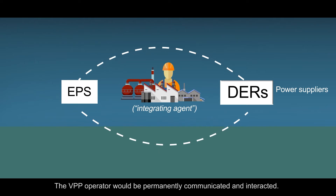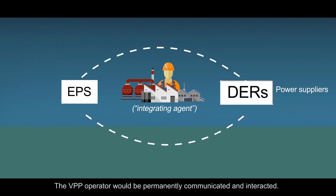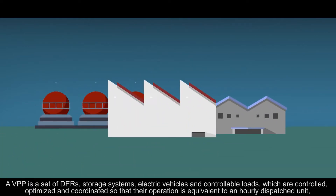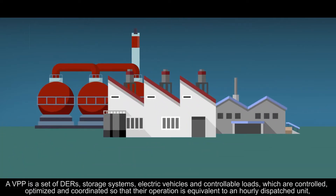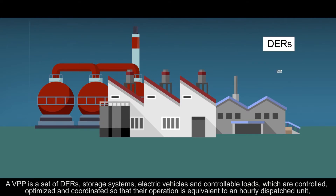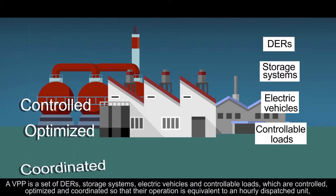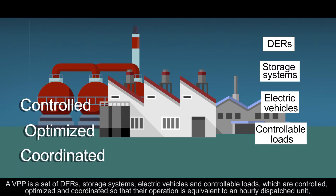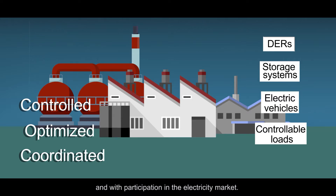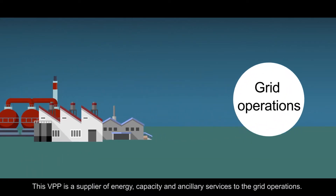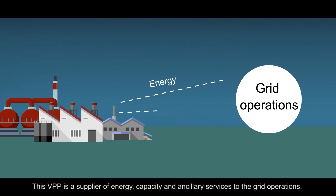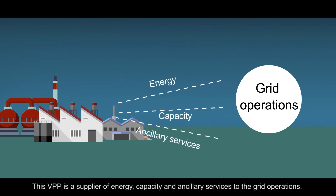The virtual power plant operator would be permanently communicated and interacted. A virtual power plant is a set of distributed energy resources, storage systems, electric vehicles and controllable loads, which are controlled, optimized and coordinated so that their operation is equivalent to an hourly dispatched unit and with participation in the electricity market. This virtual power plant is a supplier of energy, capacity and ancillary services to the grid operations.